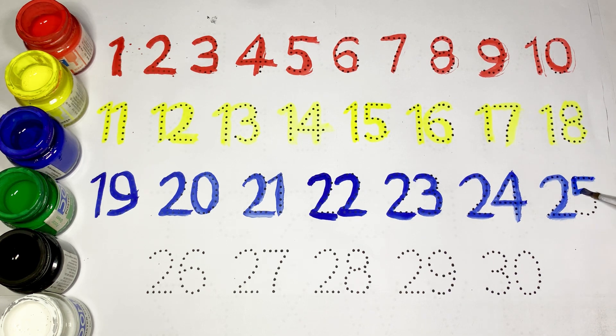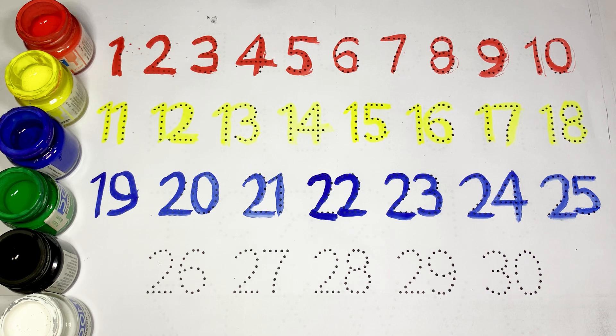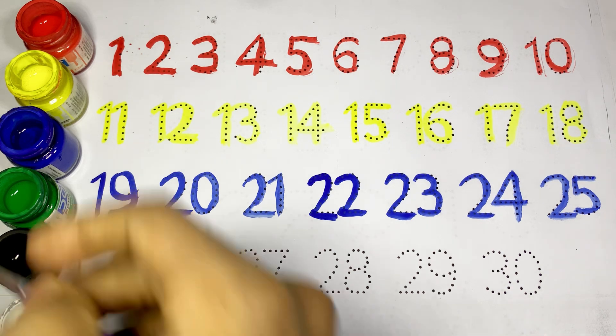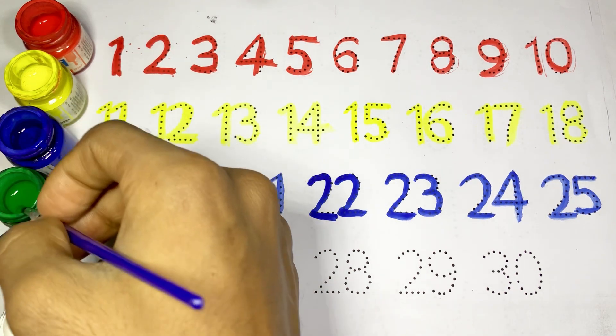The number is 25. Kids, now for 26, the number is 26, and we use green color, green color.